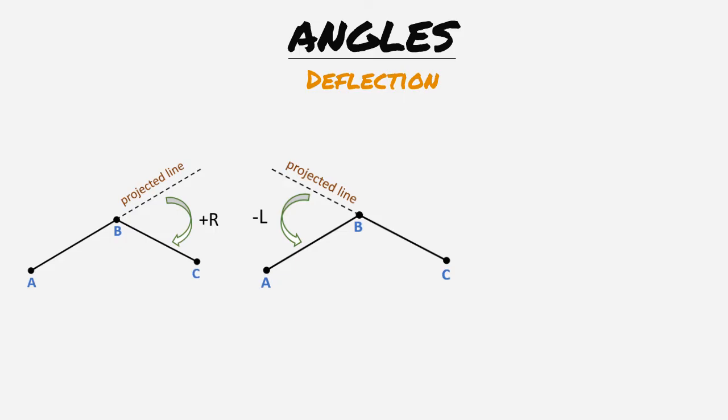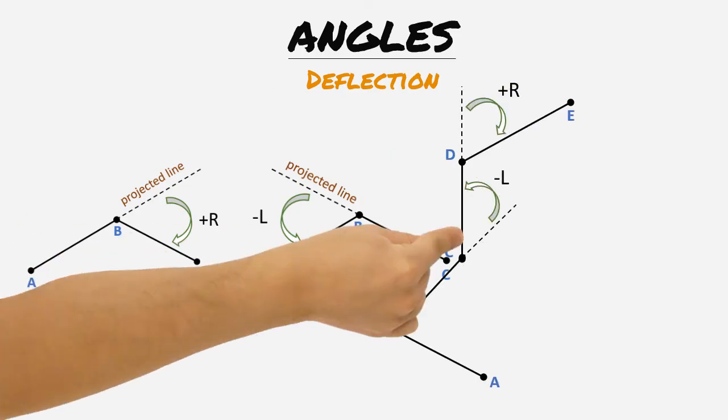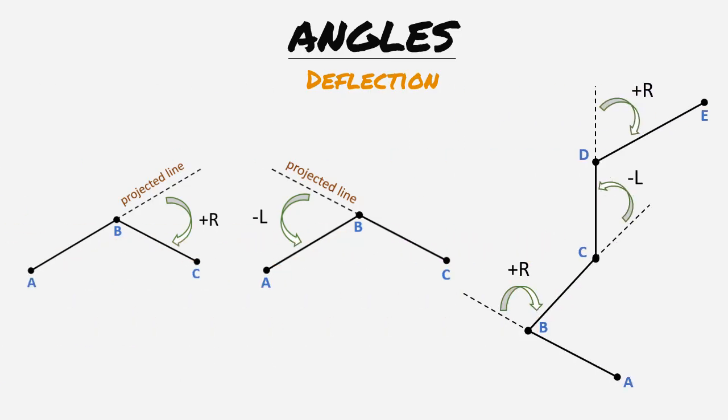Let's look at an example to summarize deflection angles. We start from line AB and project a line from the ending point B. The projecting line from the end point will be parallel to line AB. From the projected line we measure our deflection angle to the right towards line BC.